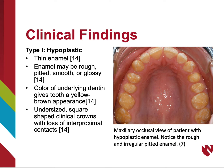In type 1 AI, there is thin enamel that may be rough, pitted, smooth, or glossy. Due to the thin enamel, the underlying dentin shows through and gives the teeth a yellow-brown appearance. The teeth may also be undersized and square-shaped, leading to a loss of interproximal contacts. This can be seen in the image on the right, along with the rough, pitted enamel.